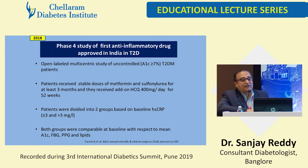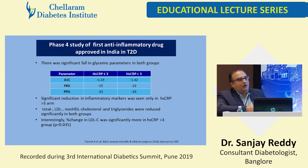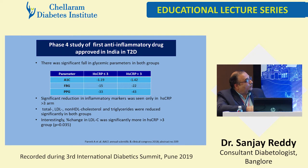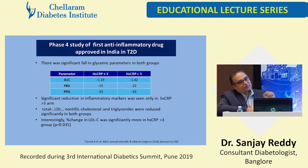This is a Phase 4 study of the first anti-inflammatory drug approved in India for type 2 diabetes. Patients with A1C more than 7% received HCQ as add-on to metformin and sulfonylurea, divided into two groups based on HSCRP — less than 3 or more than 3 — to see if HSCRP predicts better responders. Both groups were comparable at baseline. There was a significant fall in glycemic parameters in both groups, indicating HSCRP level does not determine response. However, the change in LDL was significantly more in the group with HSCRP more than 3.